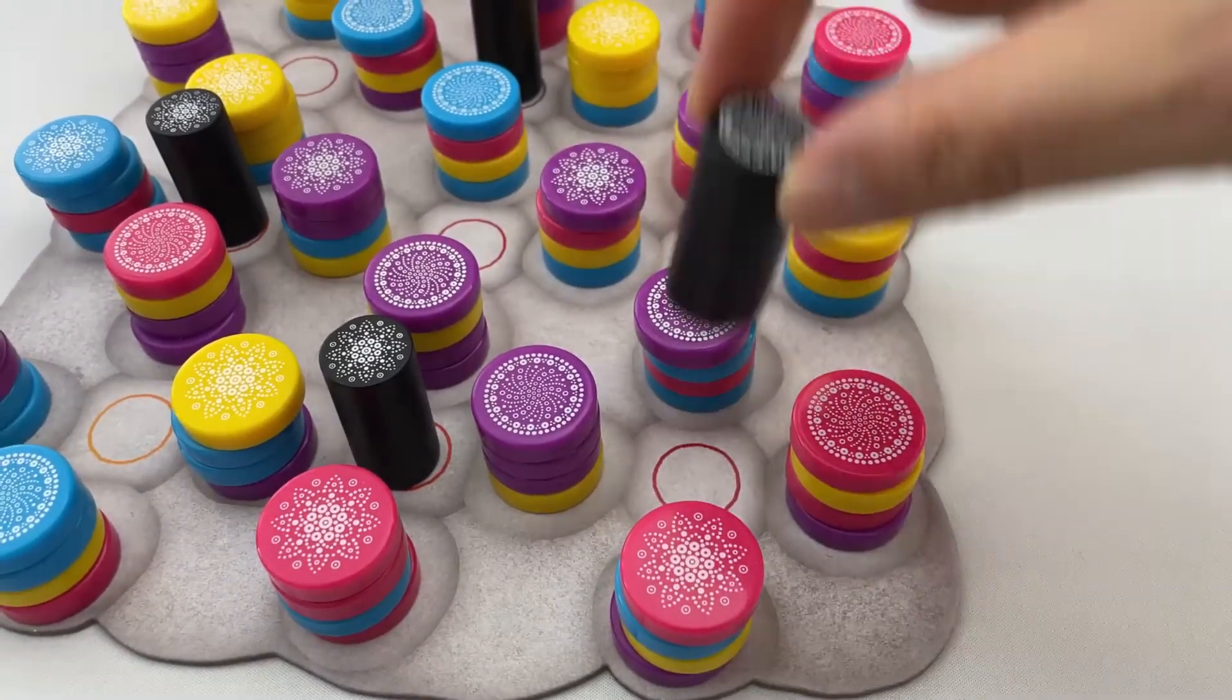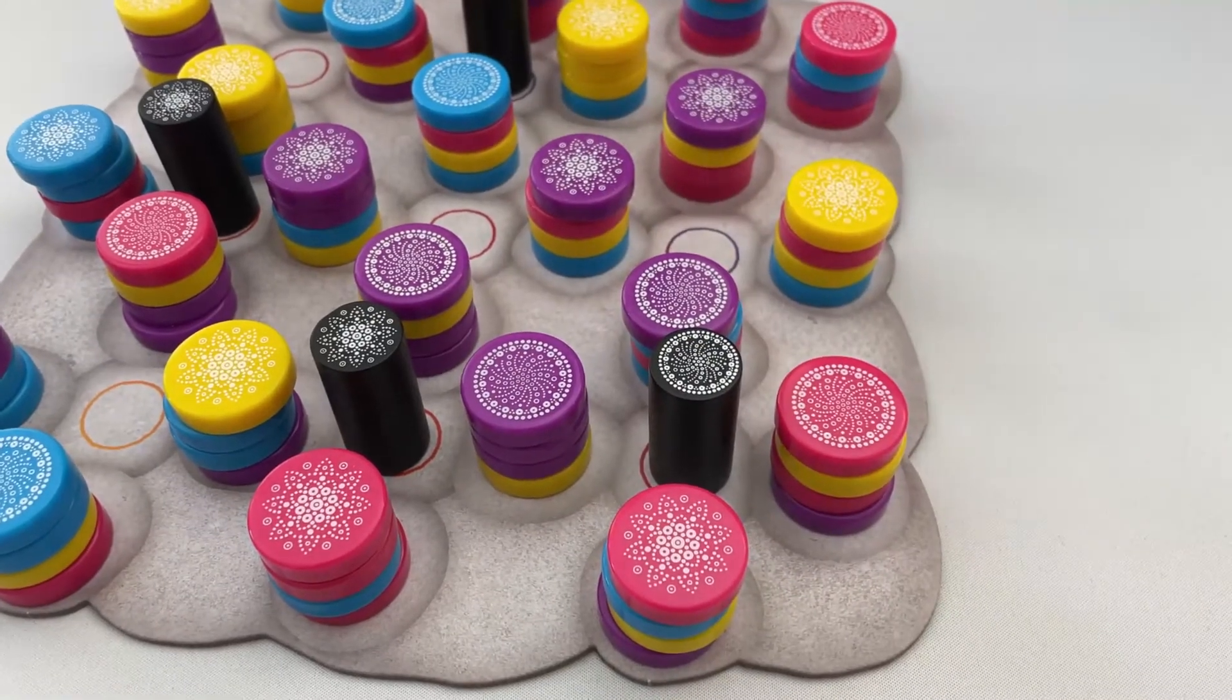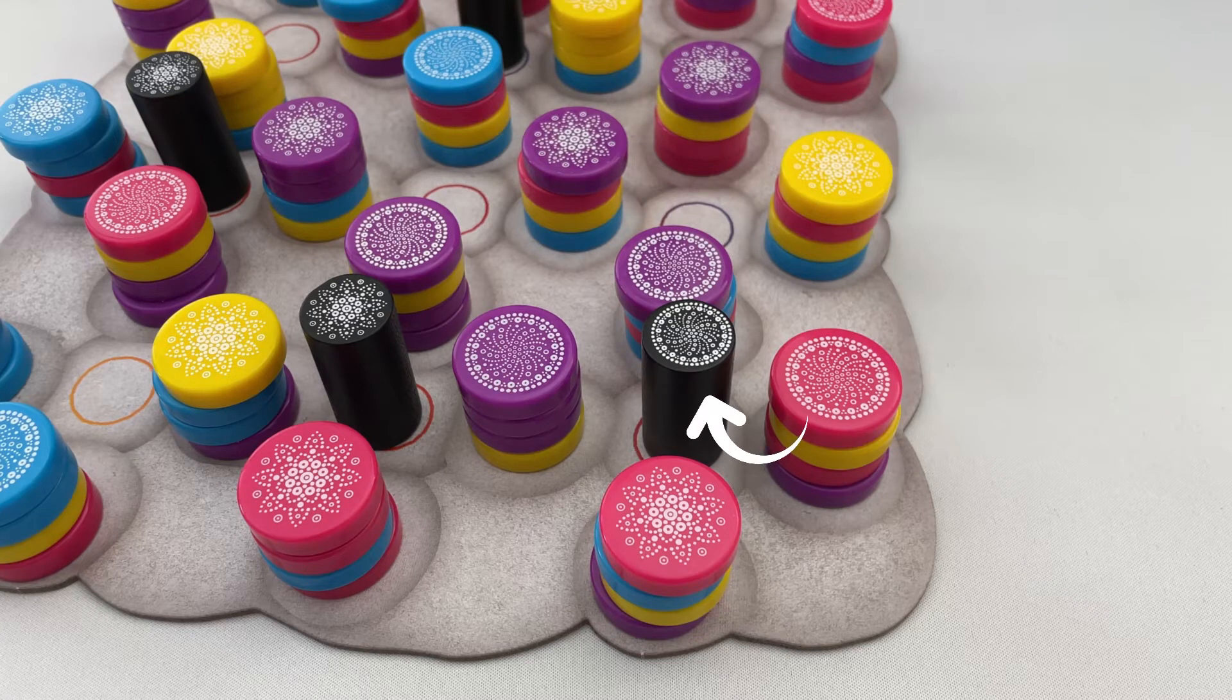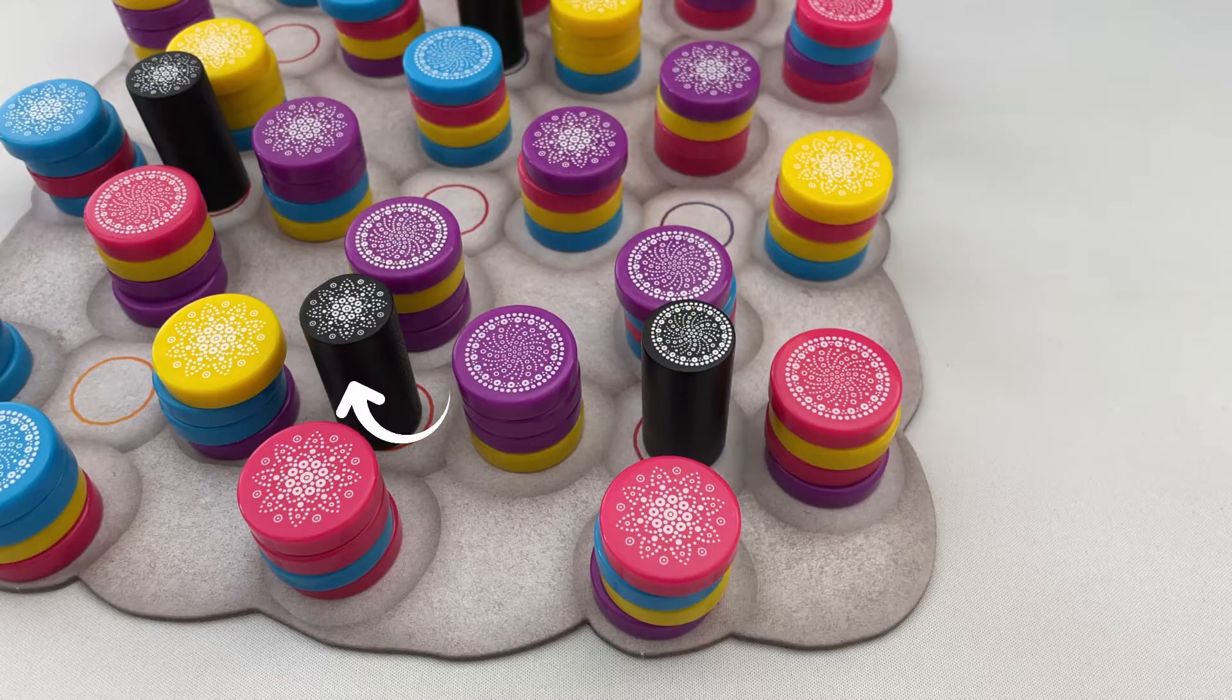To pick, move any artist to any of the other 5 empty artist spaces marked with a circle on the board. Take the top stone of adjacent stacks to that artist, but only those that match the pattern on the top of the artist and not those adjacent to any other artist.